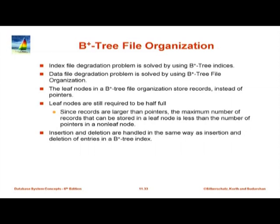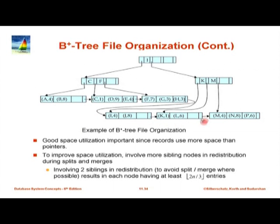This is called a B+ tree file organization. If you see here, the leaf nodes — this is a B+ tree drawn across two lines because it was too wide to fit in one. The only difference is that at the leaf, instead of storing a pointer to a record, we are storing the actual record itself. So the leaf level contains records.